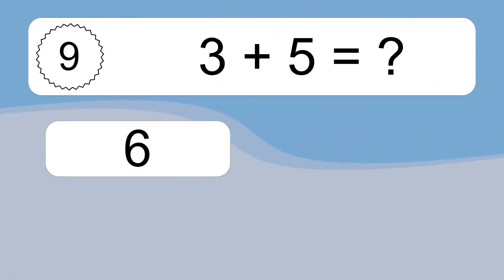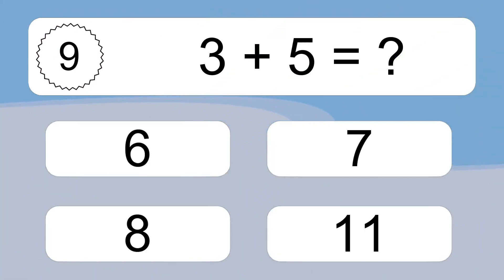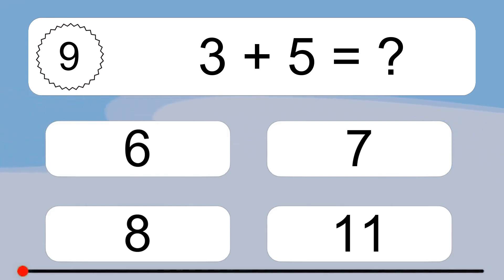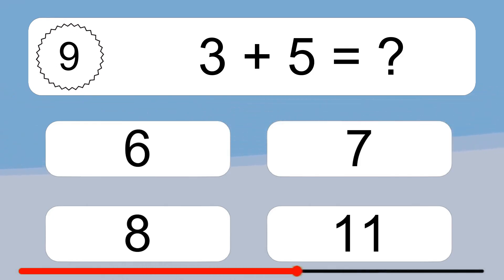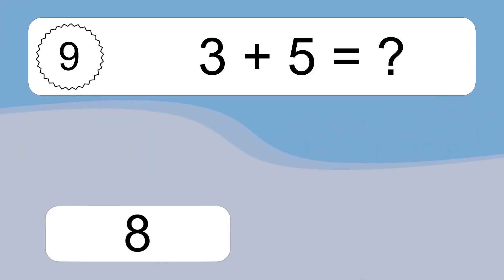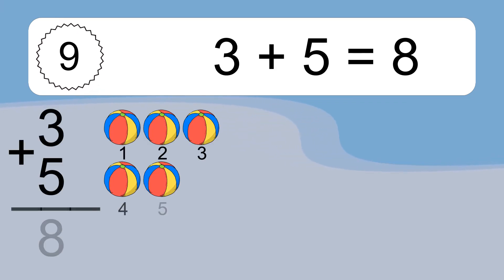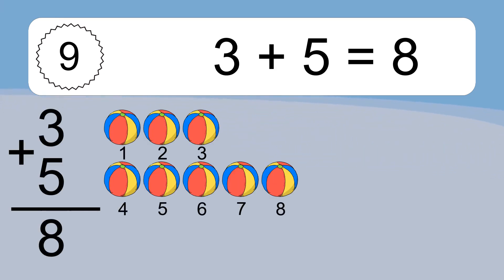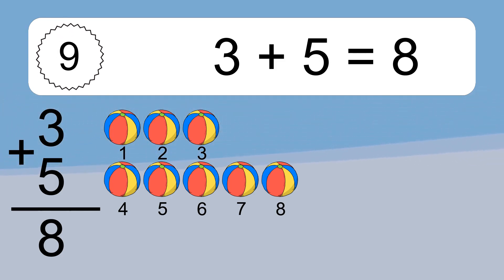3 plus 5 equals 8. Let's count it: 1, 2, 3, 4, 5, 6, 7, 8.